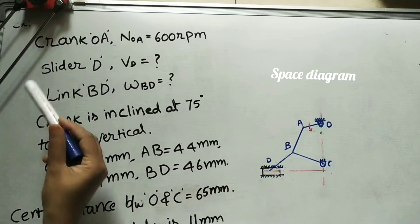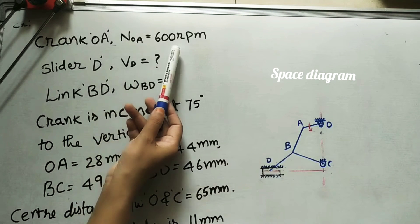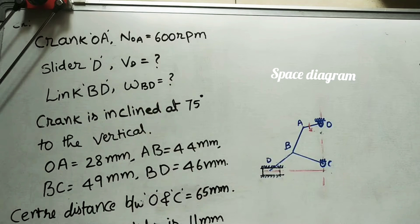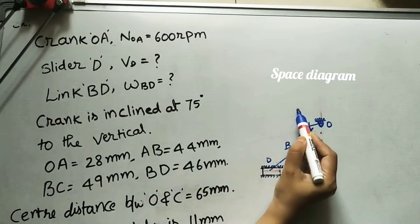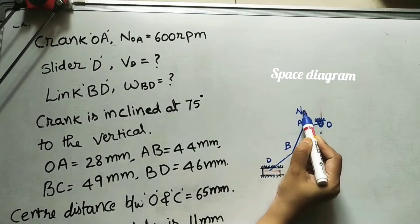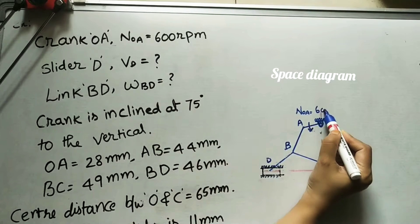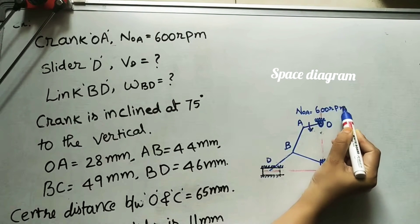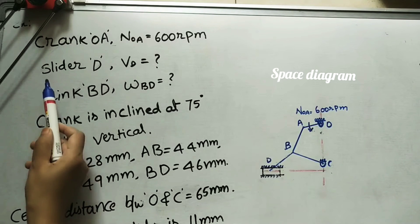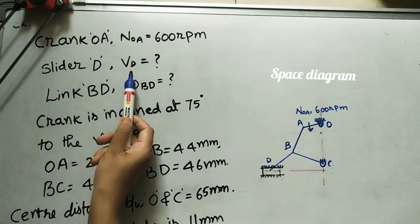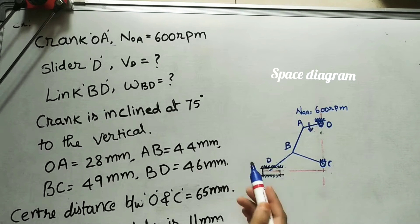The given data is: crank OA has a rotational velocity of 600 RPM. OA is the crank rotating with this speed. N_OA is equal to 600 RPM. We need to find the slider velocity — the linear velocity. This slider is moving horizontally and we need to find its velocity value.